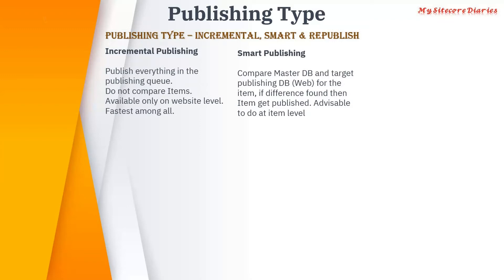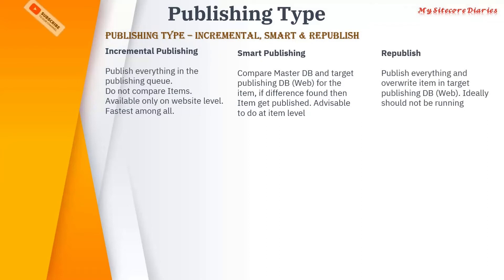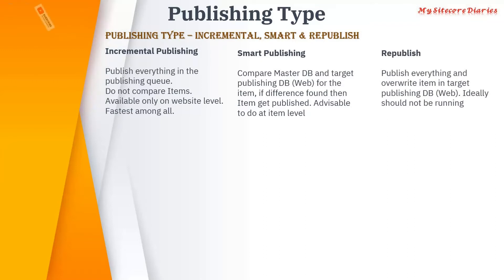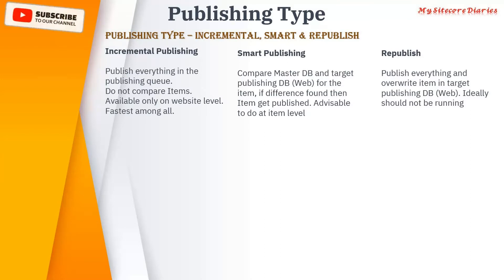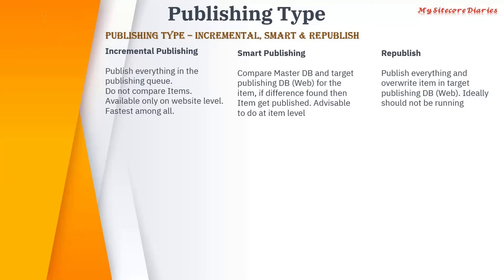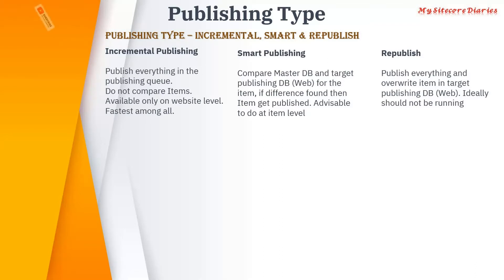Republish is essentially publish everything — it publishes everything and overwrites each item. When you select an item and republish, it does not compare anything; it just copies that item from one database to another. Ideally we do not use republish; we generally use smart publish or incremental publish.